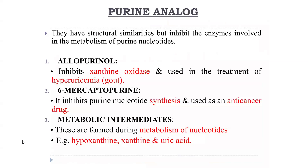There are also purine analogues — compounds with structural similarities to purines that inhibit enzymes involved in purine metabolism. Allopurinol is a purine analogue that inhibits xanthine oxidase and is used in the treatment of hyperuricemia and gout. 6-Mercaptopurine inhibits nucleotide synthesis and is used as an anti-cancer drug.